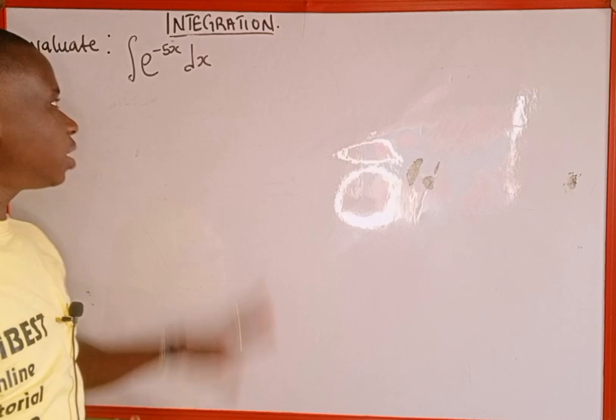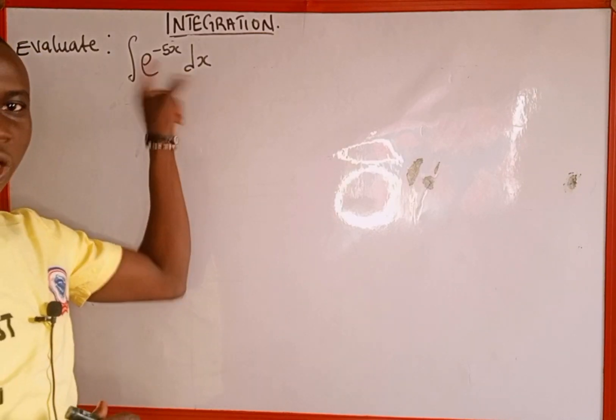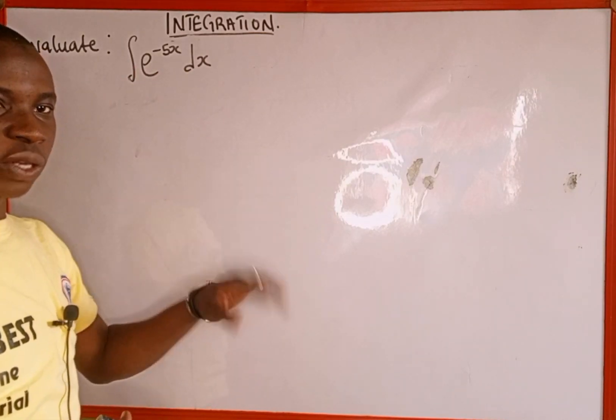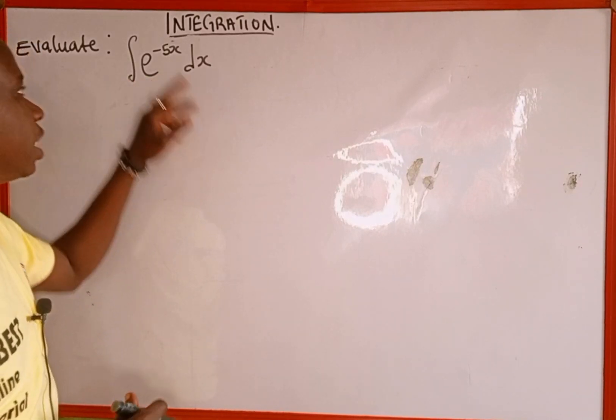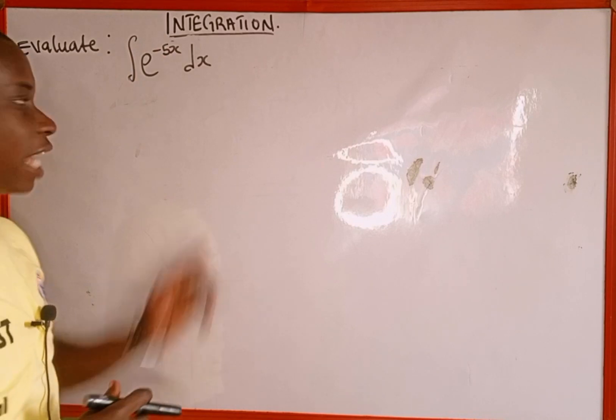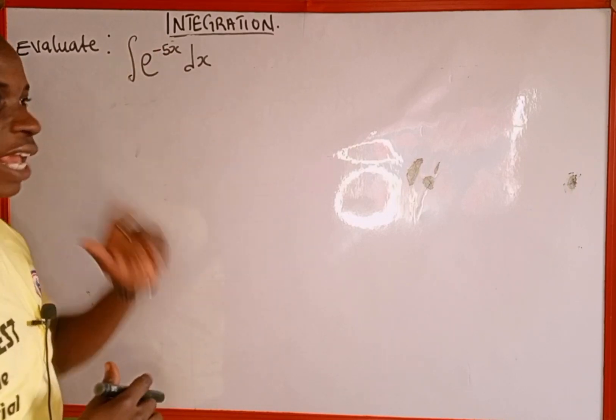To integrate an exponential function raised to the power of a linear function is very simple. What we do is write the function itself divided by the derivative of the index. And the index here is -5x.